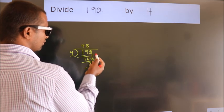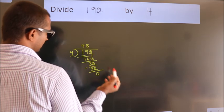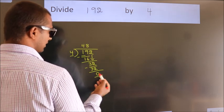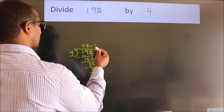After this, no more numbers to bring it down. And we got remainder 0. So this is our quotient.